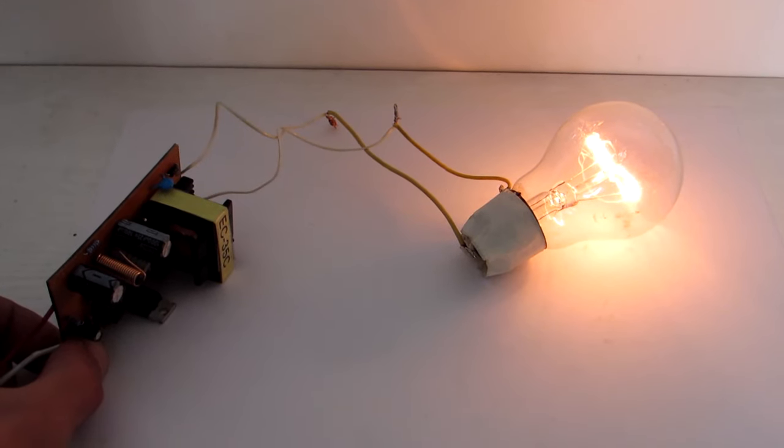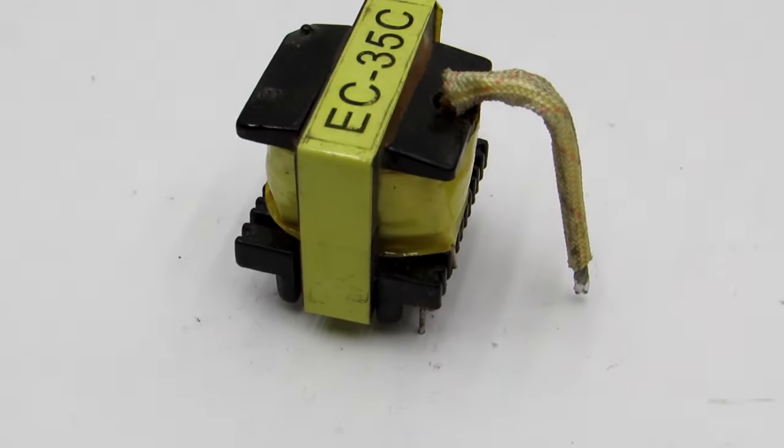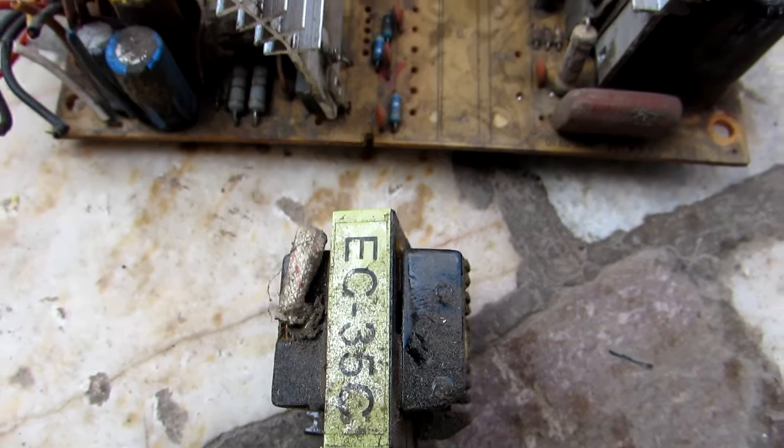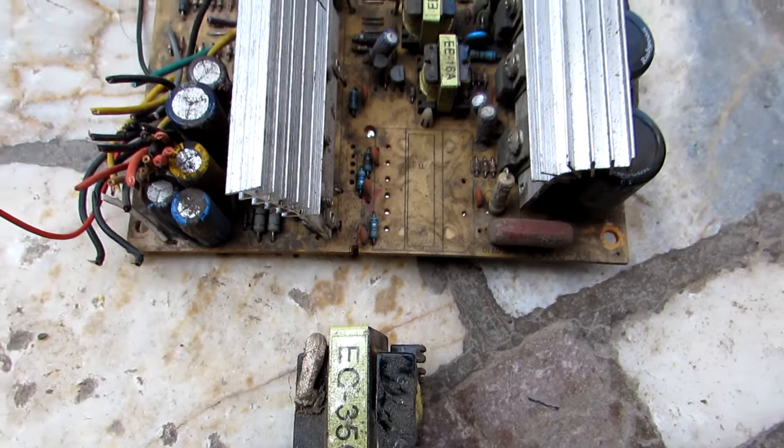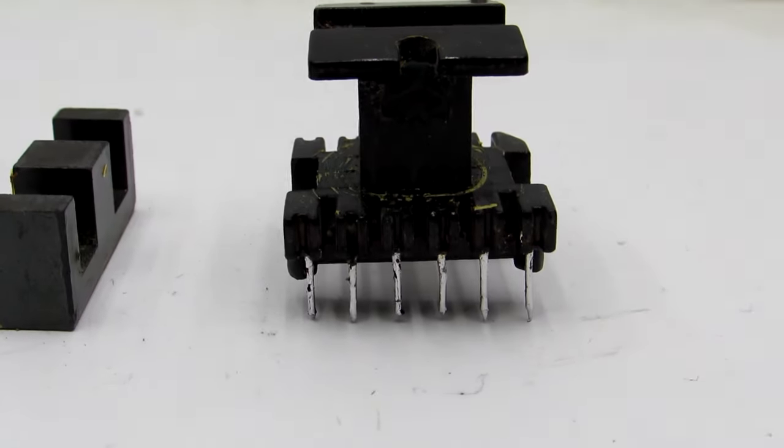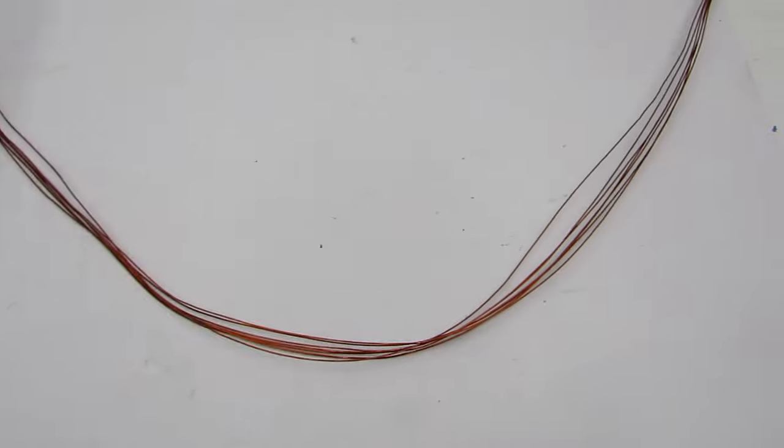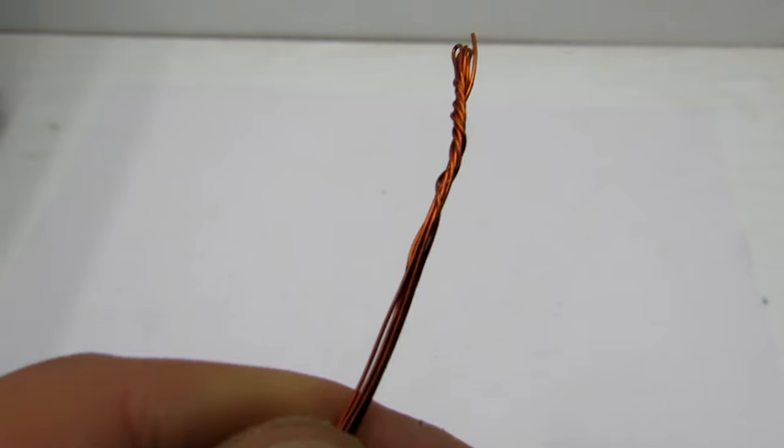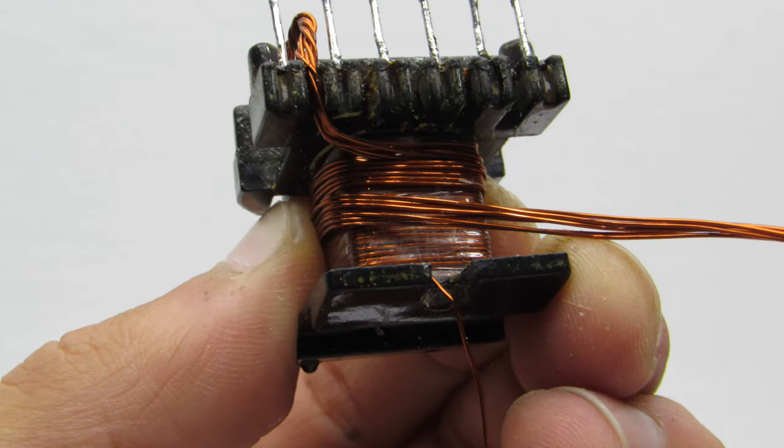The core is taken from a computer ATX format power supply with capacity of 350W. First it is necessary to disassemble the transformer. How to do this is shown in one of my videos. Next, you need to carefully remove all the windings. New primary winding is wound with 5 wires of 0.6mm each. I use multiple wires solely for the convenience of winding.